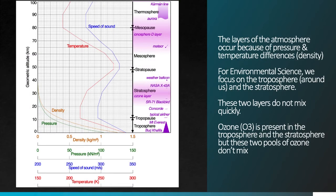The important thing to understand about the structure of the atmosphere is that we have what are called atmospheric layers. These layers aren't completely distinct from one another, but they function in different ways. The reason we call them layers is because of changes in temperature, pressure, and density as you go up in the atmosphere. For environmental science, we really are only concerned about the troposphere and the stratosphere. We live in the troposphere — this is where weather occurs and where we experience air pollution most directly.